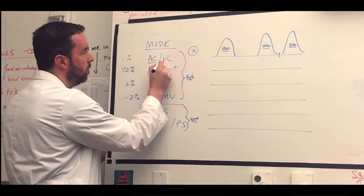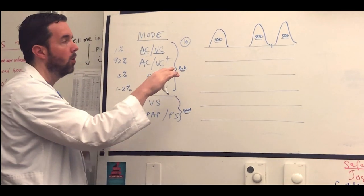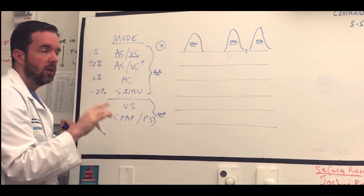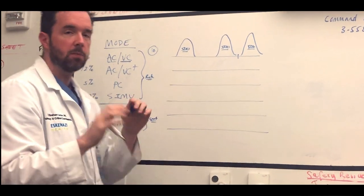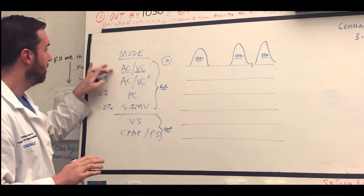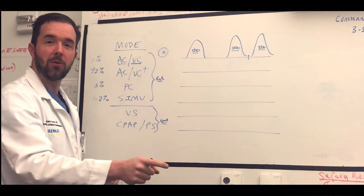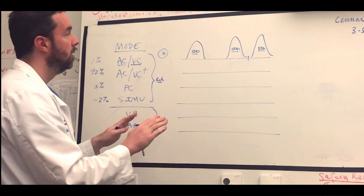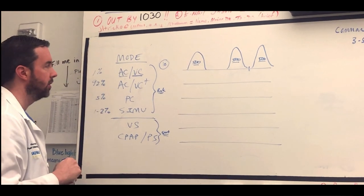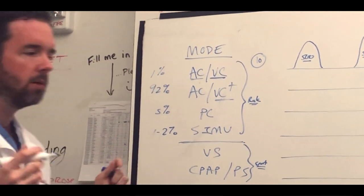In ACVC, assist control volume control, we're controlling the volume. We're not in control of the pressure. That means in this mode it's particularly important that you pay attention to your pressures because the ventilator is saying, hey Dr. Carlos, the patient needs 500, guess what, 500 is going in. So you got to be careful because in this mode you can quickly exceed some of those pressures I was talking about earlier. One of the reasons we love ACVC plus so much.